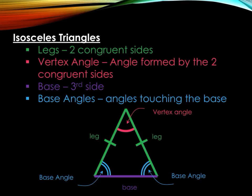First let's get familiar with our vocabulary. Take a moment to jot down and fill in your notes for all the components of an isosceles triangle, which include legs — always at least two congruent sides. We have our vertex angle, which is the angle formed by the two congruent sides. Please don't conclude that it's always at the top. Then we have our base, which is the third side that is not the legs. Please do not conclude that your base is always the bottom side. And then you have your base angles, which are the angles that are touching the base.